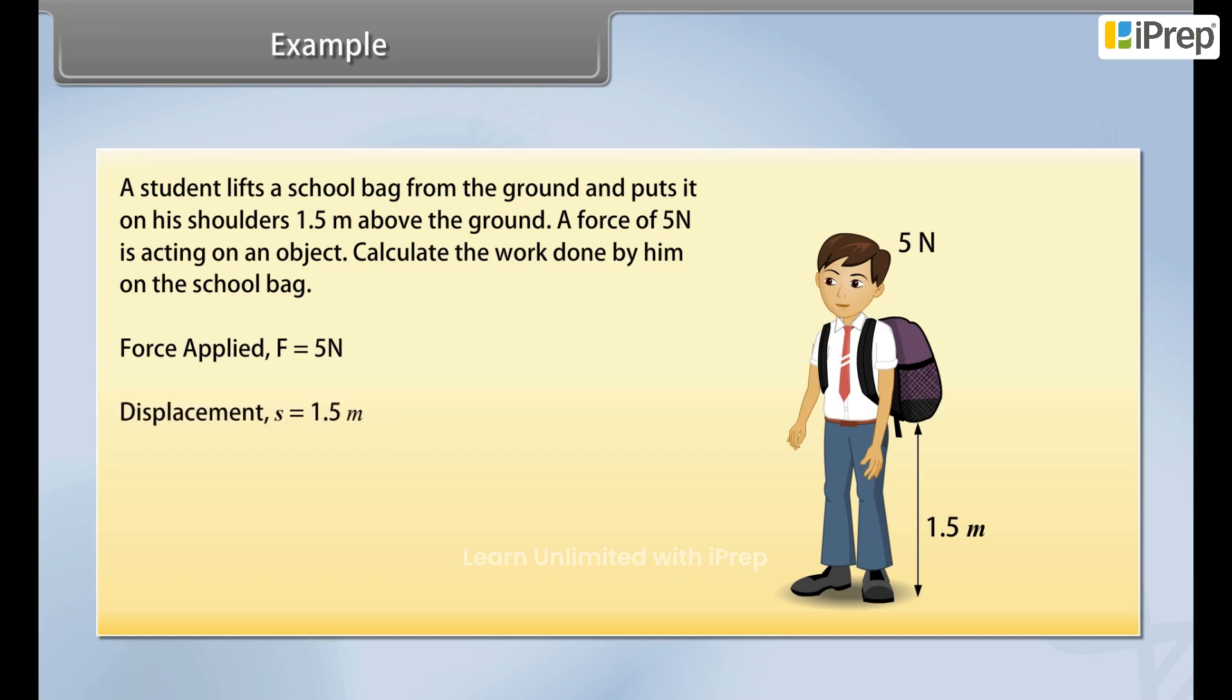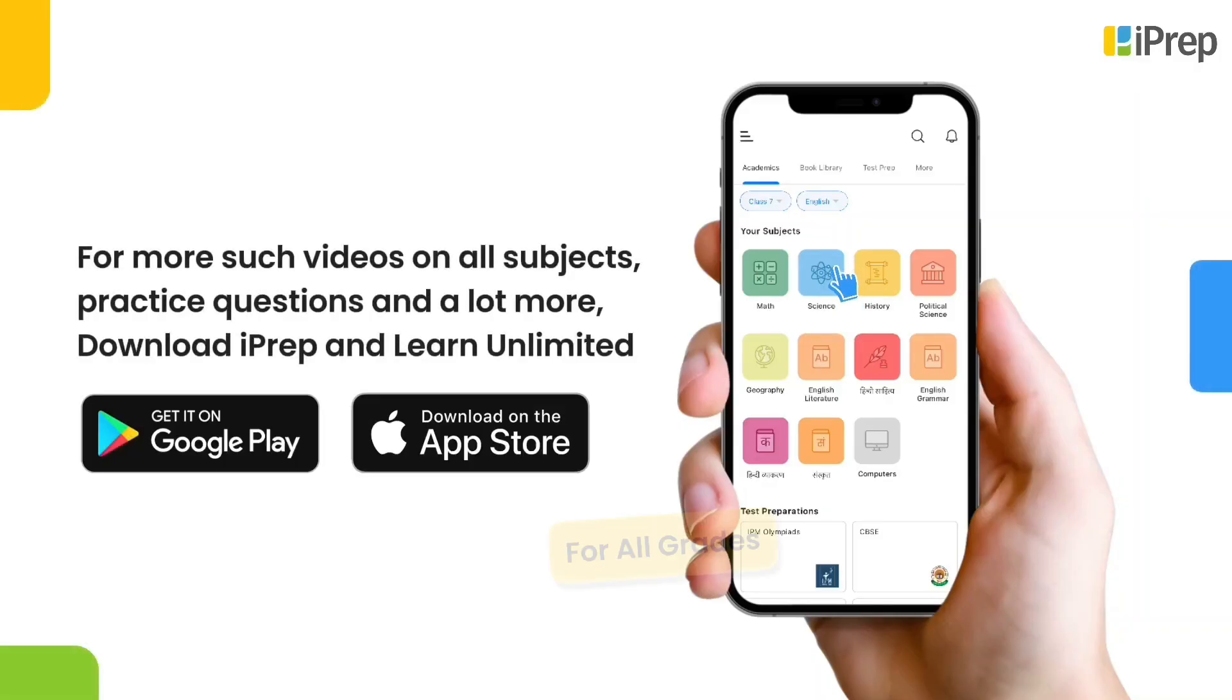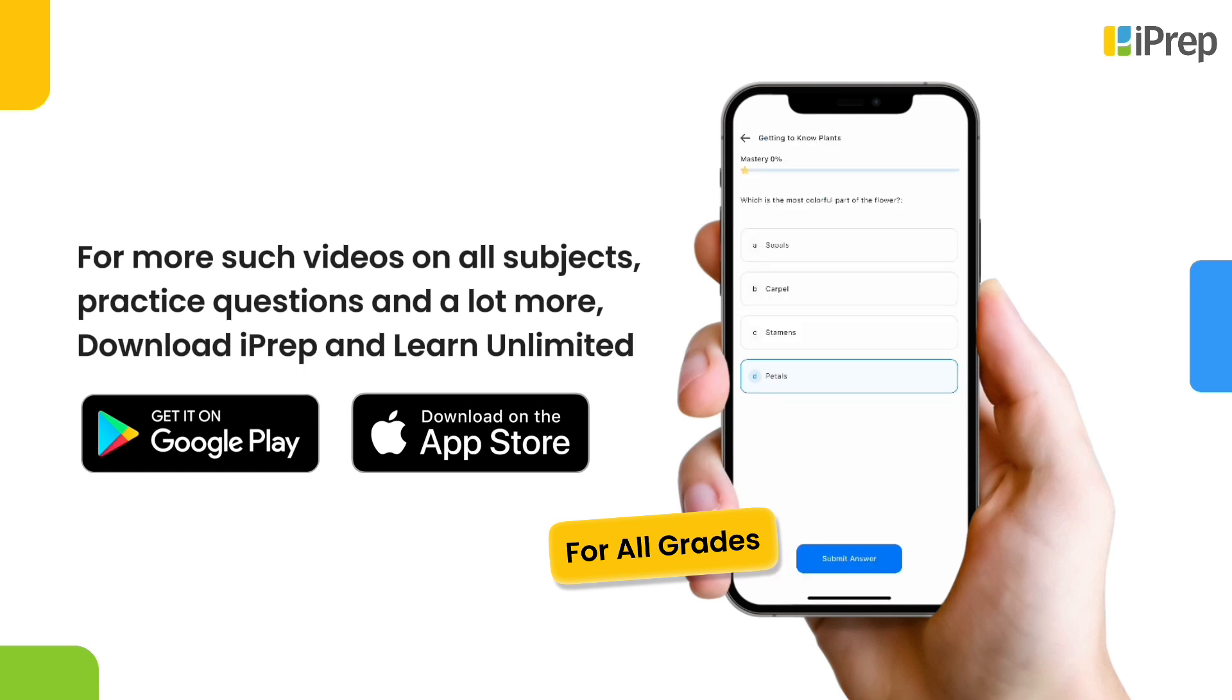We know that work done is equal to force into displacement. Therefore, we get work done is equal to 7.5 Newton meters or 7.5 Joules.